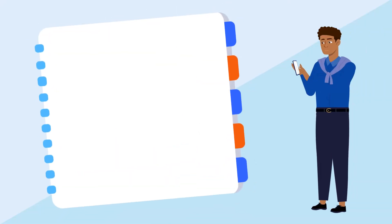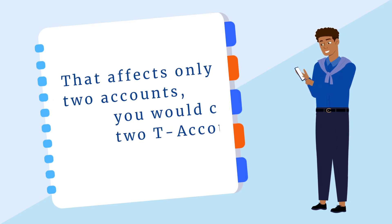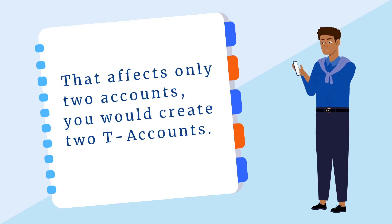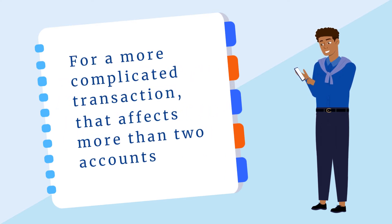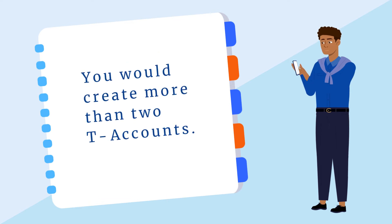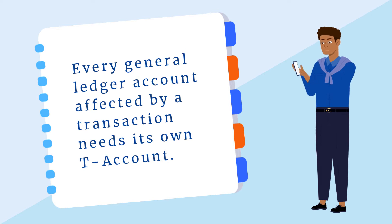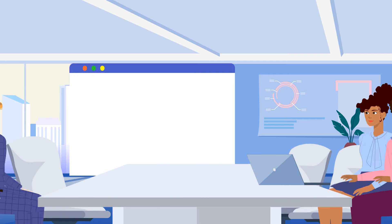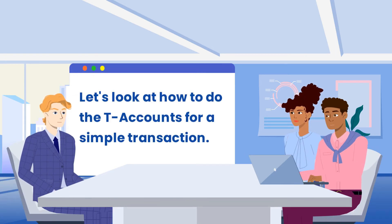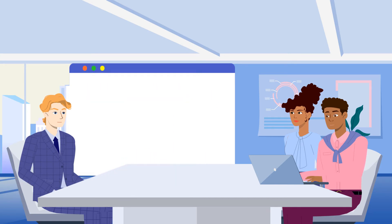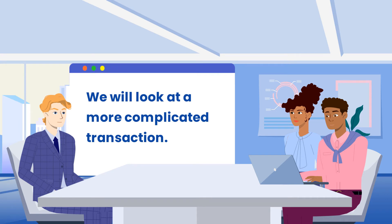For a simple transaction that affects two general ledger accounts, you would create two T-accounts. For a more complicated transaction that affects more than two general ledger accounts, you would create more than two T-accounts. Basically, every general ledger account affected by a transaction needs its own T-account. To illustrate this point, let's take a look at how to do the T-accounts for a simple transaction that requires two entries into your set of accounts. After that, we'll take a look at a more complicated transaction.